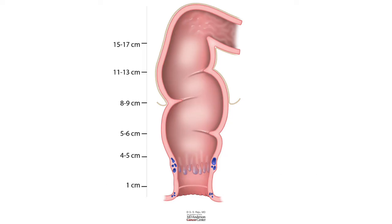The rectum is about 15 to 17 centimeters in length. The sigmoid colon enters the rectum, and the anal verge is about one centimeter once you open the buttocks. About 3 to 4 centimeters from the anal verge is the dentate line.